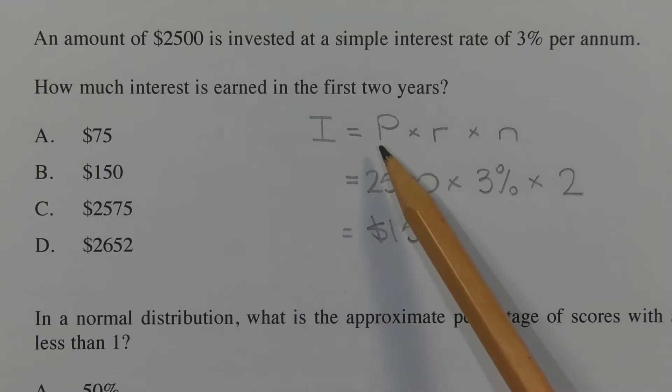I equals P times R times N, where I represents the amount of interest earned, P represents the principal or the amount invested, R represents the simple interest rate per period, and N represents the number of periods that the investment runs for.